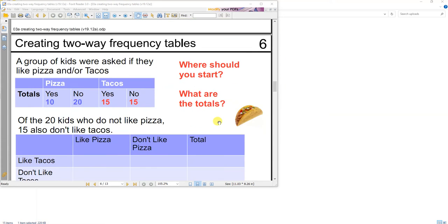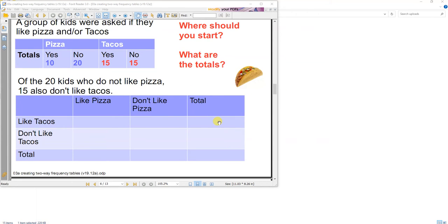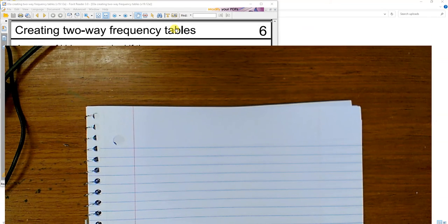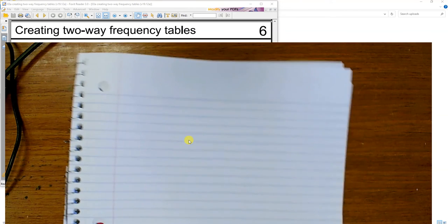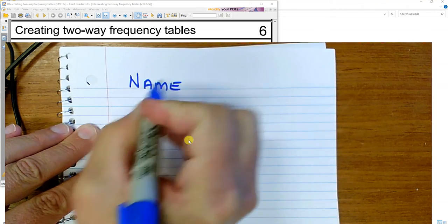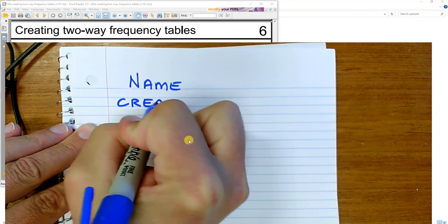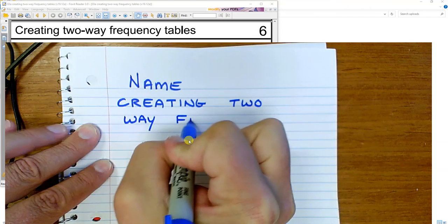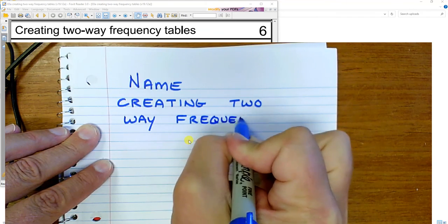This next one we're going to do in our notes. So here we go. In our notes, creating two-way frequency tables. Getting out my notebook. So our title is creating two-way frequency tables.